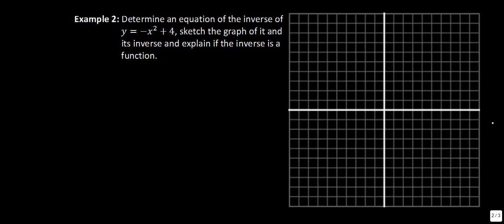Example 2 says: determine the equation of the inverse of y is equal to negative x squared plus 4. Once you've done that, sketch the graph of it and its inverse, and explain if the inverse is a function. Let's first graph this — it's just a regular quadratic with a y-intercept of 4, opening downward. Going over 1 down 1, over 2 down 4, over 3 down 9 — we get a downward parabola. Let's also put in the line of reflection y equals x.